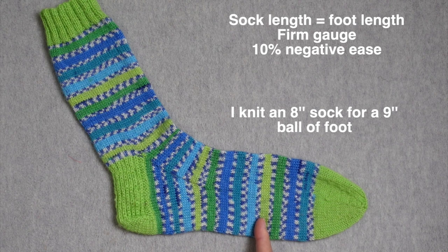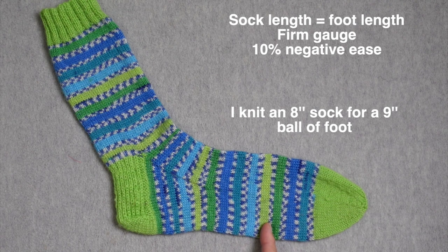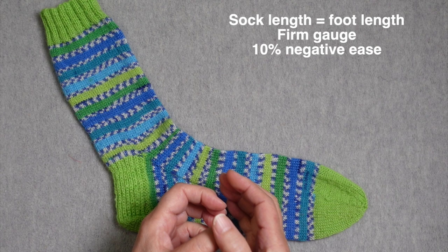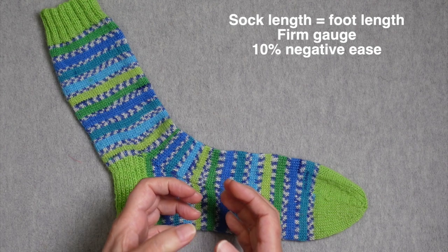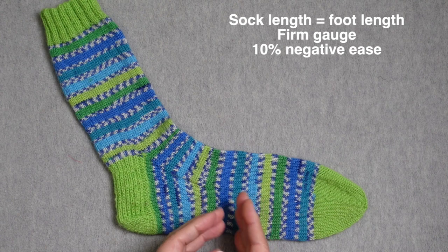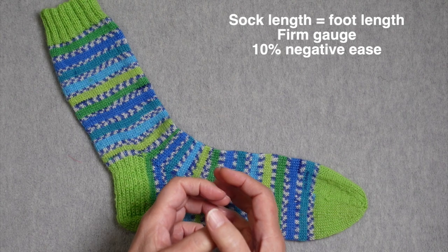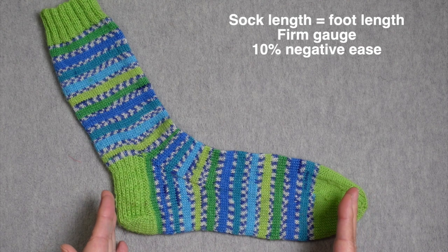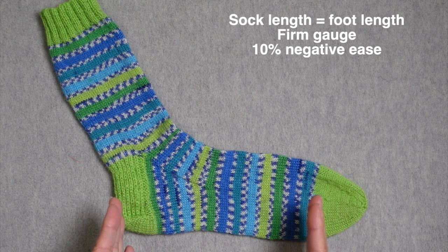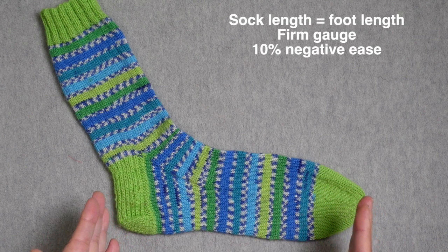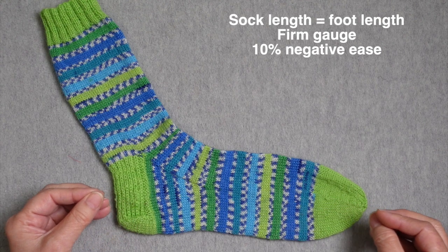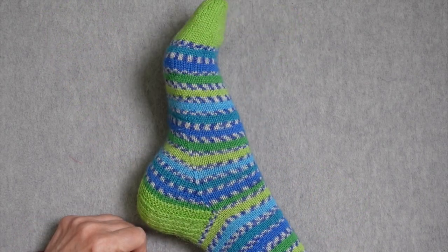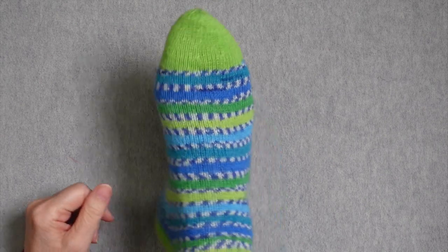That means it's going to be 10% smaller than the recipient's ball of foot circumference. So the fact that I'm knitting to a firm gauge, which resists stretching out, and I'm knitting the sock smaller, which means that the sock has to stretch to fit the circumference of the foot, that's going to automatically cause the length of the sock to pull in a little bit. When I knit to the exact length of the recipient's foot, the sock will have to stretch a little bit in the length to get a really good fit. So this is the sock that I just showed you on my foot. You can see that it fits my foot really well.